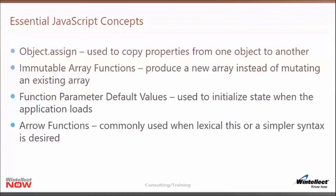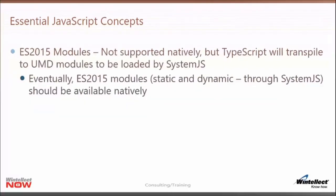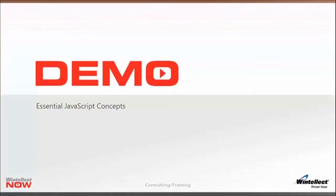Function parameter default values are really nice for the reducer function, to initialize the state parameter if no value is passed in. Arrow functions — we're going to use tons of arrow functions all over the place. Destructuring, spreads, and rest basically make working with properties easier. We are going to call into a REST API towards the end of the course using Fetch, a newer API that natively uses Promises. We will not be using Redux middleware for asynchronous operations — we're going to do it manually to better understand state management. And we'll cover ES2015 modules throughout our application.